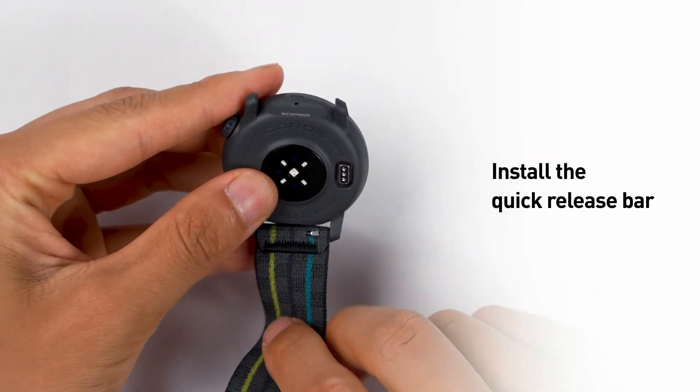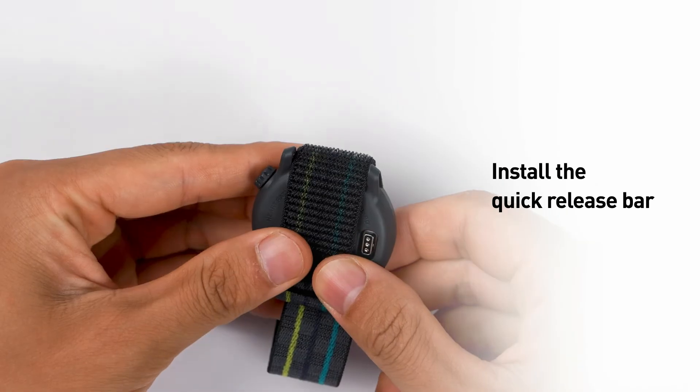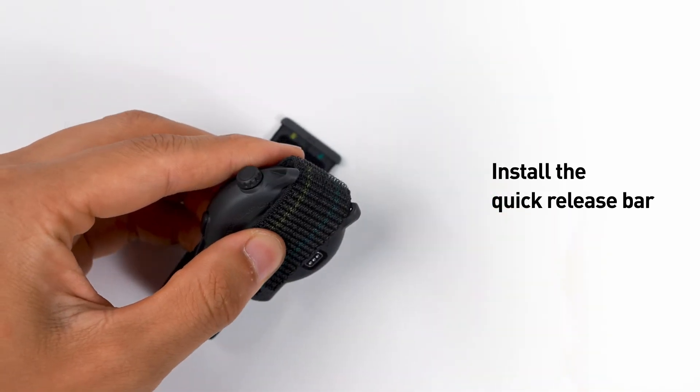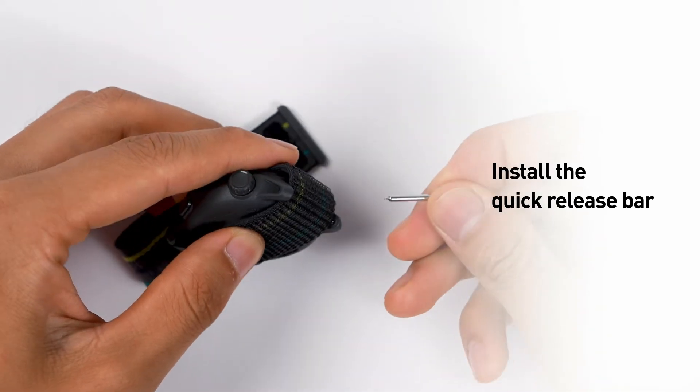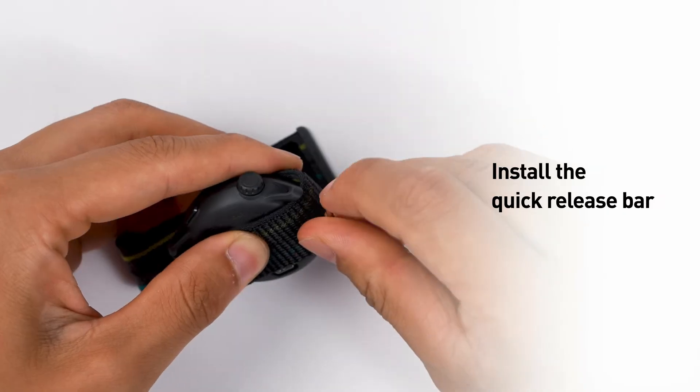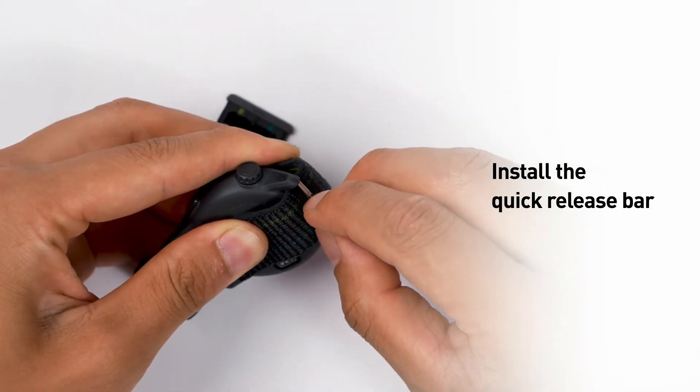Next, with the nylon band pulled across the watch body, slide one end of the quick-release bar into the lug. Pull down on the lever with your fingernail until the bar is aligned and snaps into place.